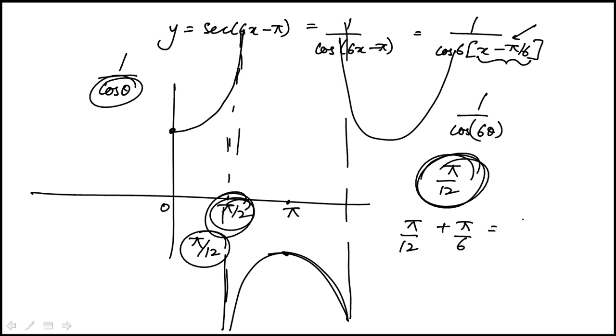And if you add this, this is going to become 3 pi over 12 or pi over 4, which is indeed one of the answer choices. So x equal to pi over 4 is one of the vertical asymptotes, and that's answer choice B.